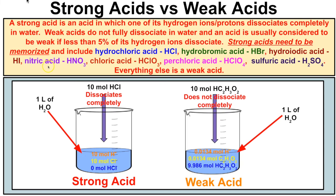A strong acid is one in which its hydrogen ions — protons — dissociate completely in water, while weak acids do not fully dissociate. An acid is usually considered weak if less than five percent of its hydrogen ions dissociate. For example, if we place 10 moles of HCl in a beaker of water, it completely dissociates into 10 moles of H⁺ and 10 moles of Cl⁻, with no HCl remaining — so HCl, hydrochloric acid, is a strong acid.